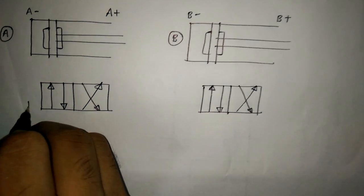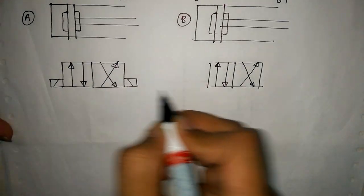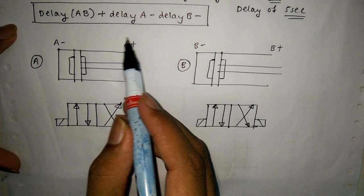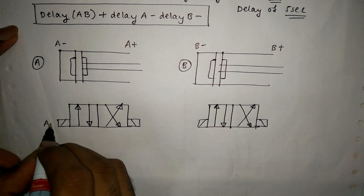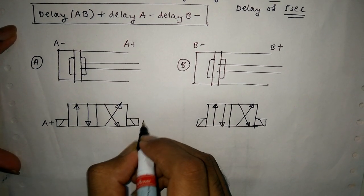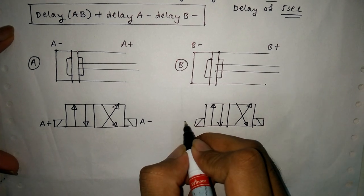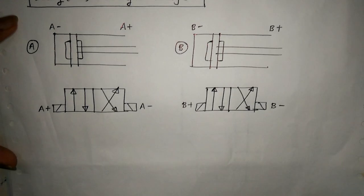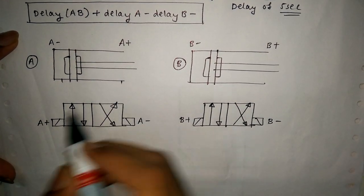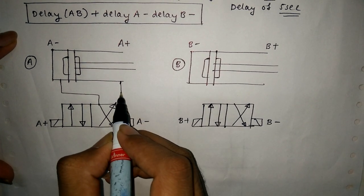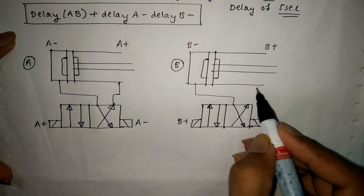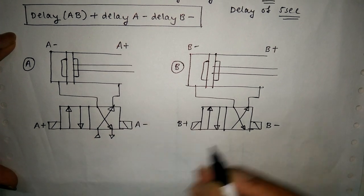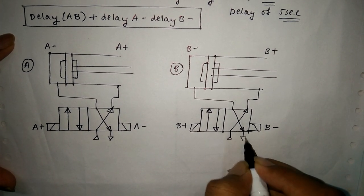Drawing the solenoid: A+ will be in cross. This is your A+, this is your A-, this is your B+, this is your B-. Then connecting the cylinder with the valve — this is your compression, this is your exhaust, this is your compression, this is your exhaust.